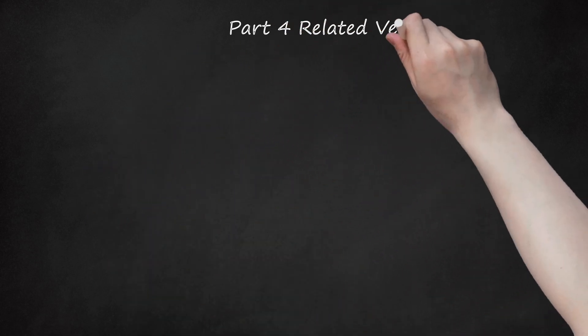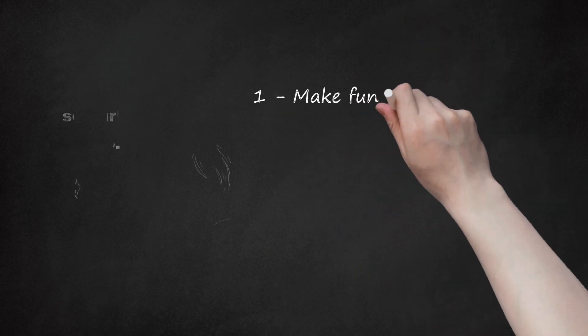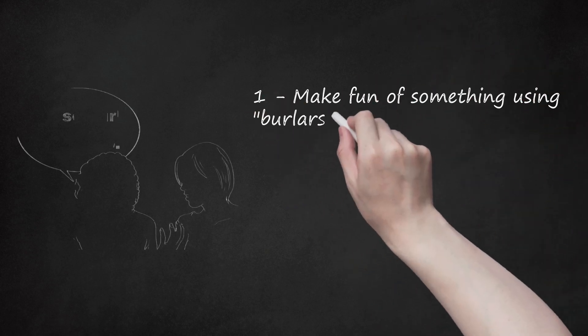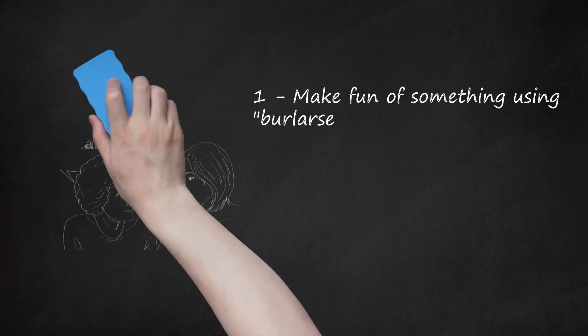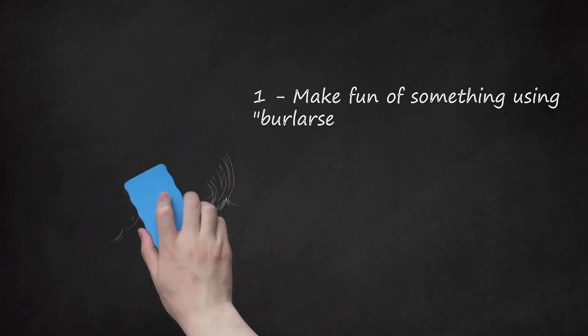Part 4: Related Verbs. 1. Make fun of something using 'burlarse.' When someone makes fun of someone else, this would likely be the most appropriate verb to use. Pronunciation: bur-lar-se de. This verb is reflexive, so you'll need to use an appropriate pronoun before the verb. You'll also need to use the preposition 'de' before introducing the person being made fun of; otherwise, standard conjugation rules apply. Example: 'Ella se burla de su hermano' — She makes fun of her brother.